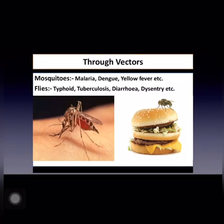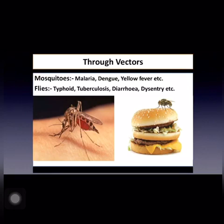Infectious diseases can also spread through vectors. Many animals which live with us may carry diseases. Vectors are basically the carriers of disease or infection — these animals carry the infecting agents from a sick person to another healthy person, acting as intermediaries. For example, mosquitoes are a vector of the disease called malaria.